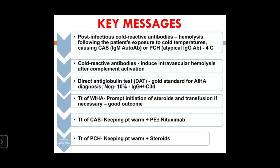Post-infectious cold reactive antibodies cause hemolysis following cold temperature exposure. They can be IgM type (cold agglutinin) or IgG type (PCH), active at 4°C, inducing intravascular hemolysis after complement activation. DAT is the gold standard, detecting IgG and C3d — it may be negative in 10 percent of cases requiring enhanced testing. Treatment of warm AIHA: prompt steroids and transfusion if necessary (the earlier the treatment, the better the outcome). Cold agglutinin disease: keep patient warm, may require plasma exchange. PCH: keep patient warm with steroids.